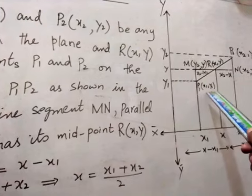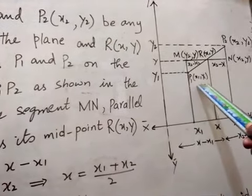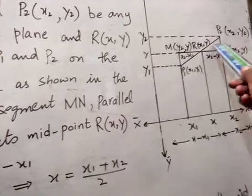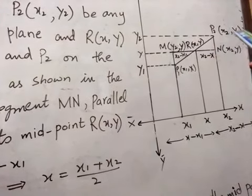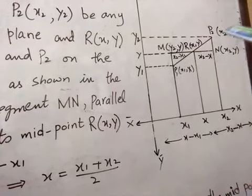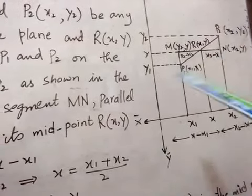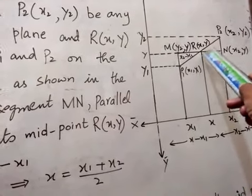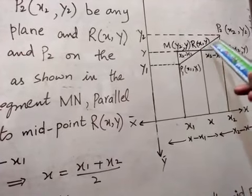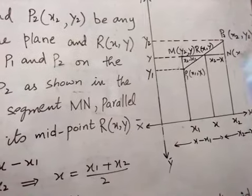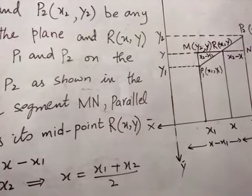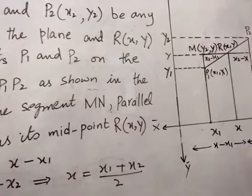P1 has two coordinates x1 and y1, and P2 has two coordinates x2 and y2. They are two distinct points in the plane. And R is their midpoint, having coordinates x and y. Now we will prove that R is the midpoint of points P1 and P2.